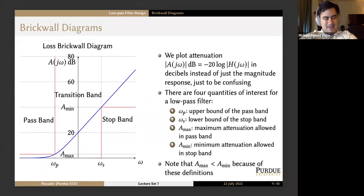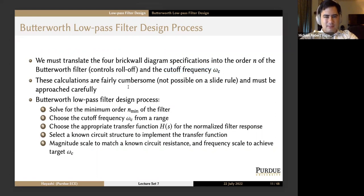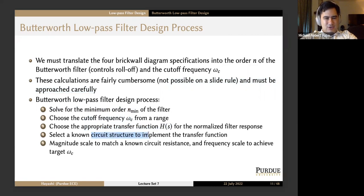You can say a_max is something not equal to 3 dB, in which case your math gets a little harder, depending on how you want to define the pass band. These were hard calculations that weren't possible on a slide rule, but as computers got more sophisticated — from mainframes to pocket calculators — this process became available to anyone. The low-pass filter design process is five steps: choose the minimum order, choose the cutoff frequency, choose the appropriate transfer function, select a known circuit structure, then magnitude scale and frequency scale.